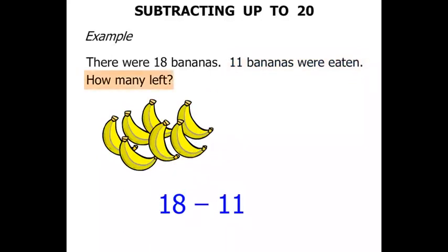How many left? 1, 2, 3, 4, 5, 6, 7. So the answer equals 7. But there's 7 green bananas.